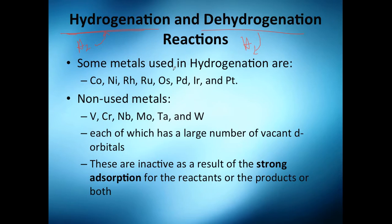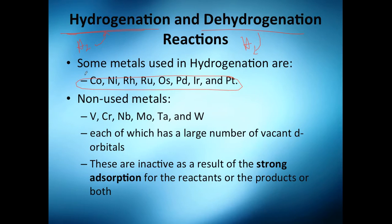Hydrogen is one of the most dynamic molecules or reactions you can actually use in refineries. You can use many transition metals such as cobalt, nickel, rhodium, osmium, palladium, iridium, and platinum.